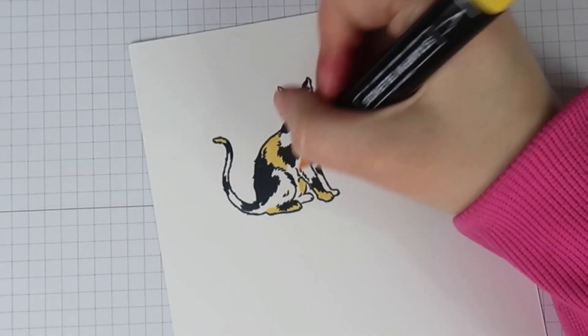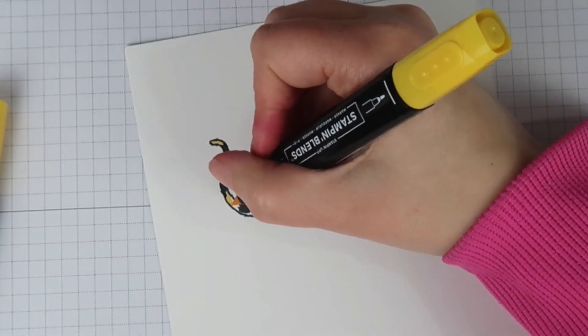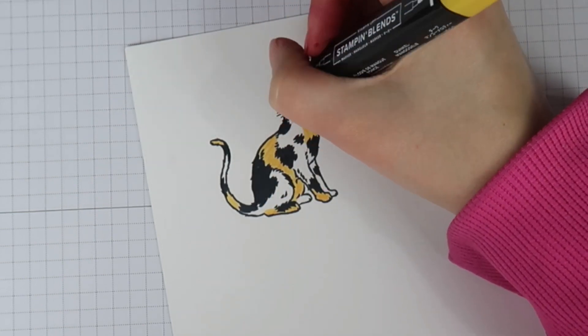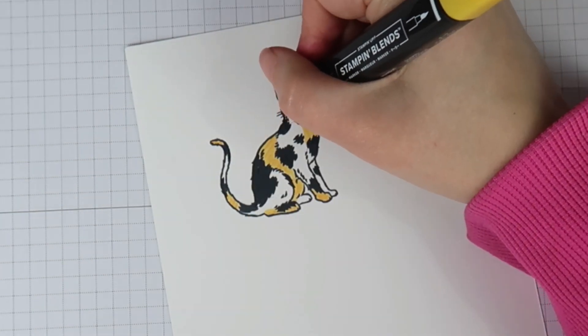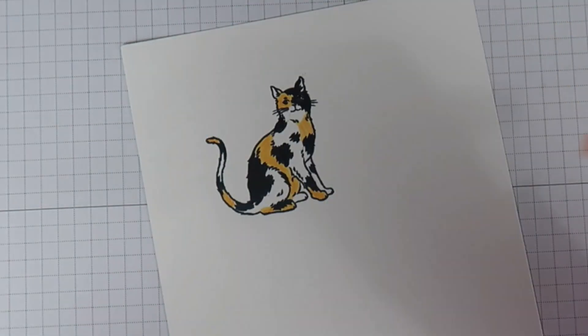And I went ahead and pulled up a picture of a calico from Google Images just to kind of give me an idea of where I should be placing color and how it should look overall. And I added a few spots with my light blend marker and then I came back in and darkened up some shadows.